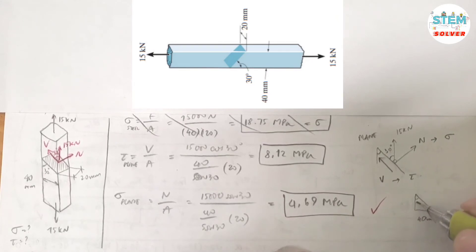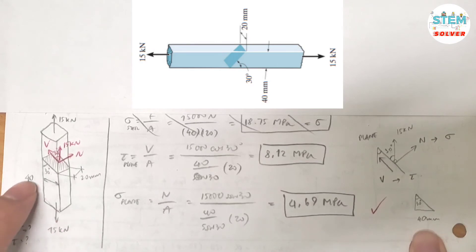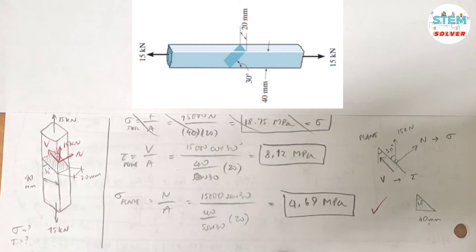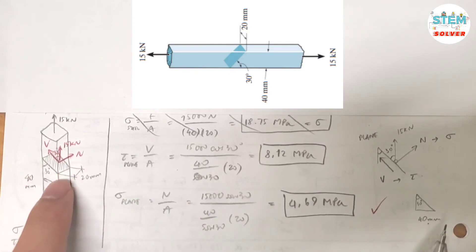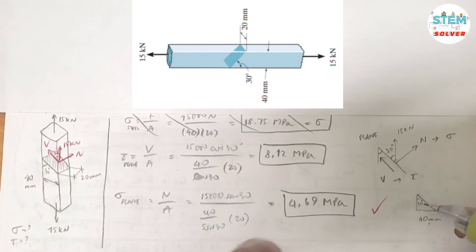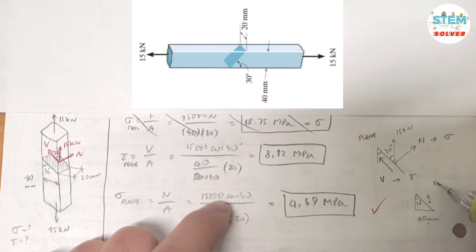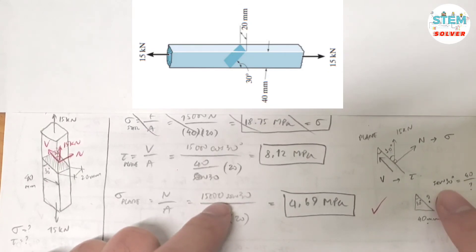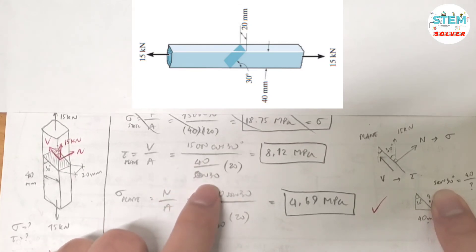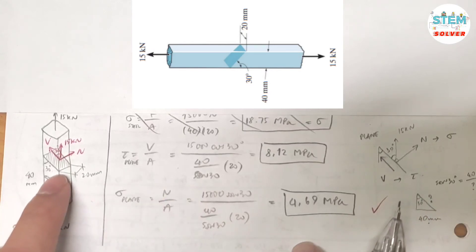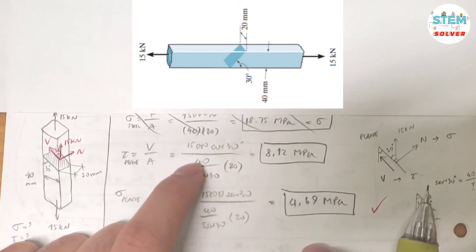This dimension is 40 mm (the depth) and the width is 20 mm. The area is the inclined length times the width, so you need to find that inclined length. Using trigonometry: sin(30°) = opposite / hypotenuse, so hypotenuse = 40 / sin(30°). The area is therefore (40 / sin(30°)) × 20 mm.